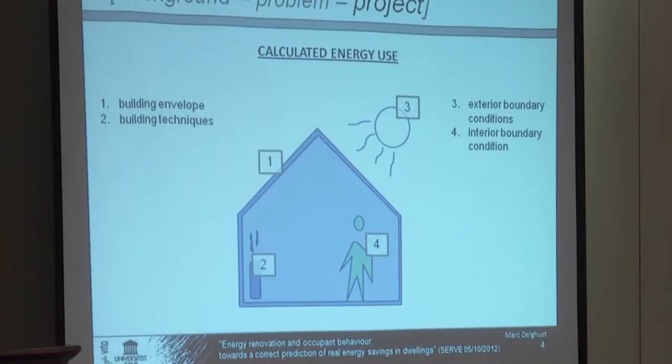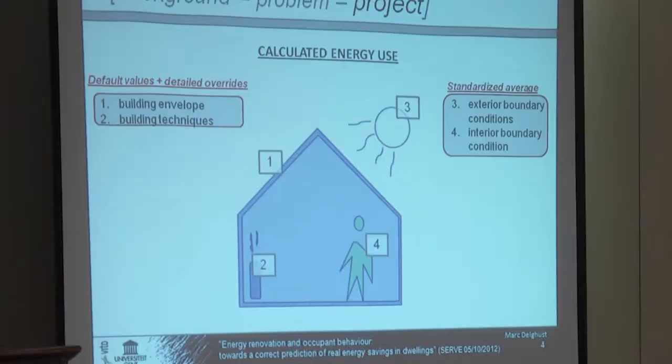The background project is actually looking at the calculation method. Those ISO standards start from a heat balance in houses. The heat balance energy use is actually a simple idea — you have four main parameters: the building envelope and building techniques; the exterior boundary condition (weather, sun, temperature); the interior boundary condition (set point temperature, internal heat gains, and so on). That is all within the calculation model, but to make it efficient we use default values, sometimes overwritten with detailed values — standardized averages, standardized climates, standardized user behaviour, and so on. That's the first cause of discrepancy.